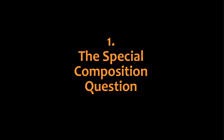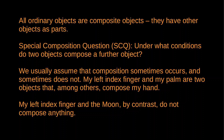This leads to what is known as the special composition question: under what conditions do two objects compose a further object? We assume that my index finger and my palm are both part of my hand — they are two objects that compose a further object, my hand. And my hand, together with other things, composes my body. But if we take my left index finger and the moon, these are separate objects — they don't compose anything, or so we normally think.